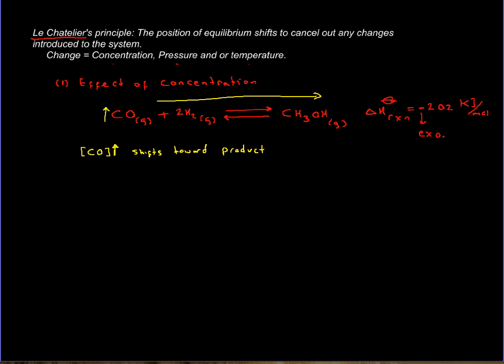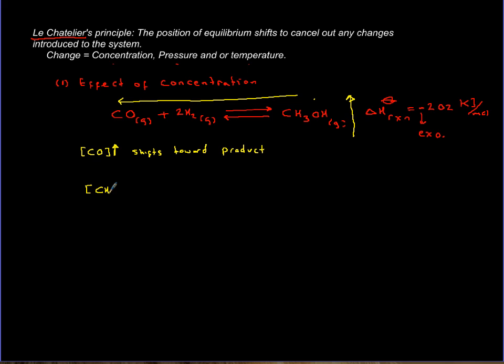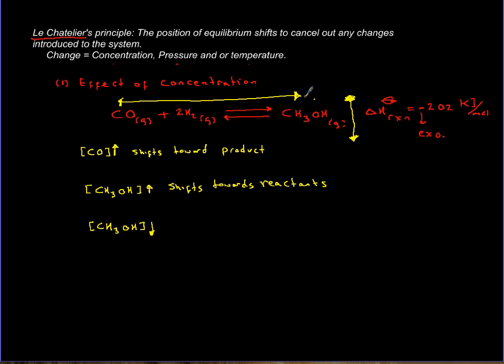What happens if you increase the concentration of another species? Let's say concentration of methanol — it's the same concept. It will shift to the other side, which this time is the reactants. So if concentration of methanol goes up, the system shifts towards reactants. But if you drain methanol — if you decrease it — then you shift toward methanol to give you more, which is good. So if you want to produce more methanol, drain it. The system shifts towards product.